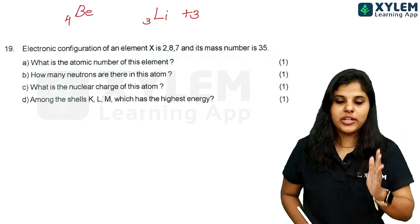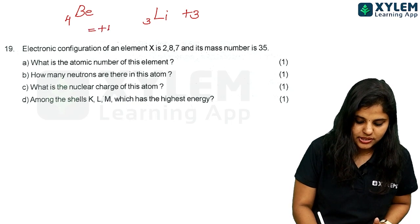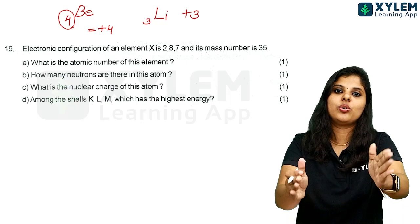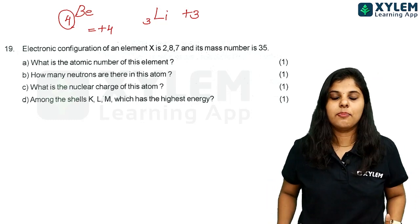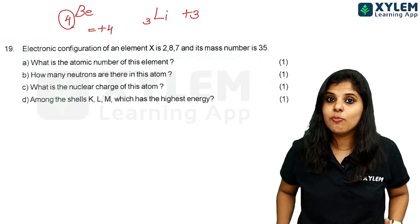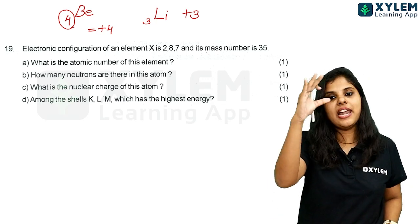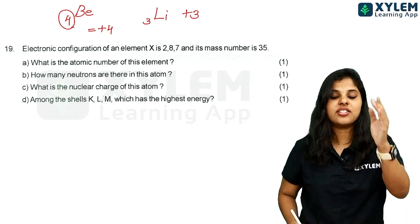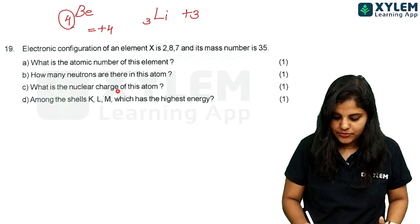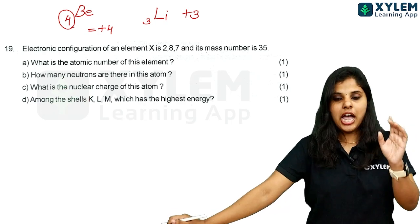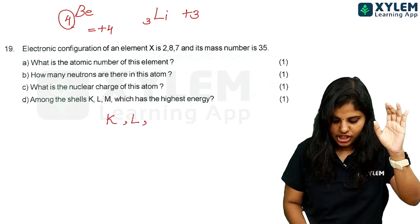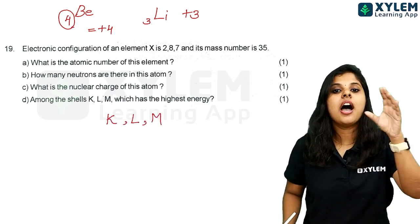So nuclear charge is plus 4, because it is the nuclear charge. Last question: among the shells K, L, M — which has the highest energy? If you have three shells — K shell, L shell, M shell — then you will have the highest energy in M shell.